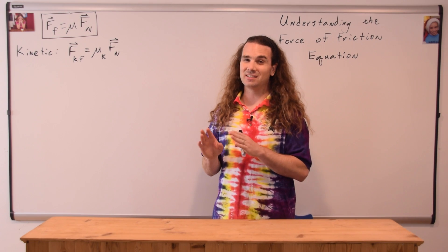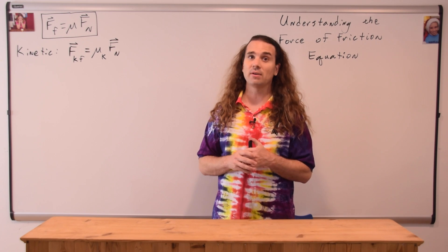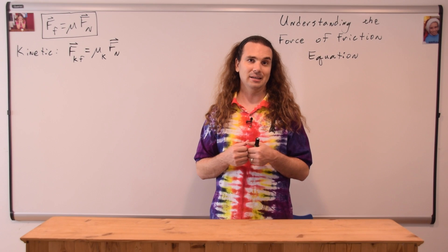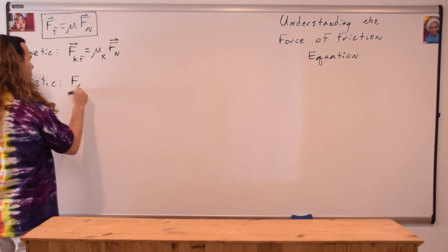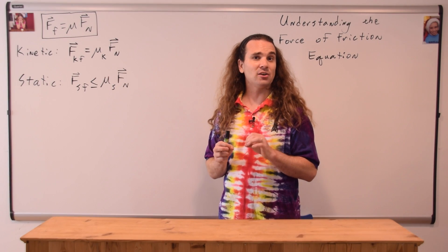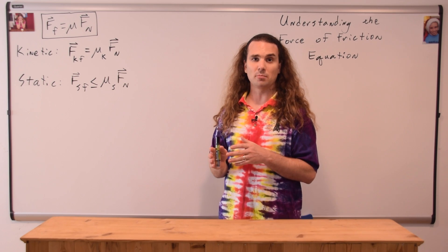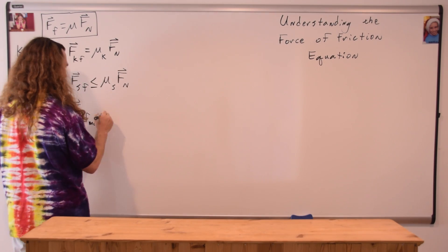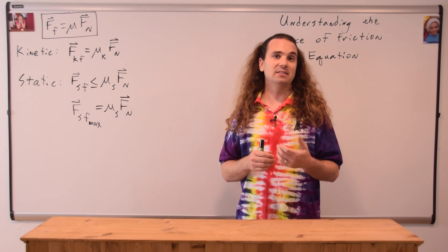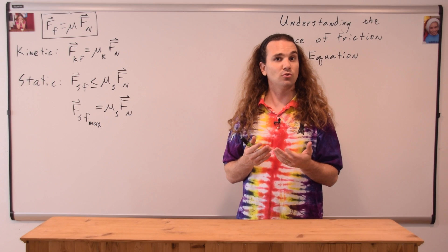Now, when it comes to static friction, where the two surfaces do not slide relative to one another, it is a bit more complicated. The force of static friction is less than or equal to the coefficient of static friction times the force normal. Therefore, the force of static friction maximum is equal to the coefficient of static friction times the force normal.